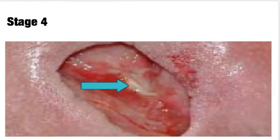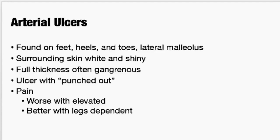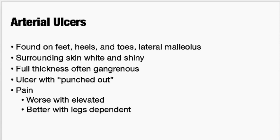Complications of pressure injuries are really infections. Signs of infection include increased exudate, increased odor, a lot more pain suddenly, or surrounding tissue redness or inflammation. If the bone is exposed, the patient is at risk for osteomyelitis — when the bone gets so infected that infection goes down into the bone. That's very hard to treat and usually requires amputations, although I have had patients who refused amputation and were on IV antibiotics for six to nine months.